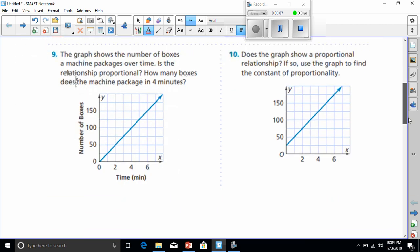You guys got 9, so I've got 10. Does the graph show a proportional relationship? If so, use the graph to find the constant of proportionality. Well, for it to be a proportional relationship, we said it has to go through the origin and be straight.